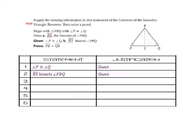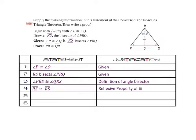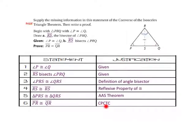By the definition of angle bisector, angle PRS is congruent to angle QRS. Now that we have two pairs of congruent corresponding angles, we need a congruent corresponding side. By the reflexive property of congruence, side RS is congruent to side RS. We can now say that triangle PRS is congruent to triangle QRS by the Angle-Angle-Side theorem. Since all corresponding parts of congruent triangles are congruent, side PR is congruent to side QR by CPCTC — corresponding parts of congruent triangles are congruent.